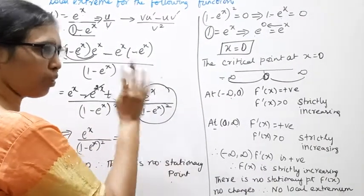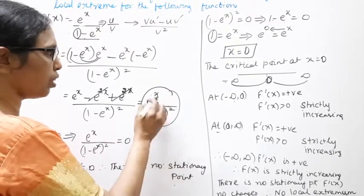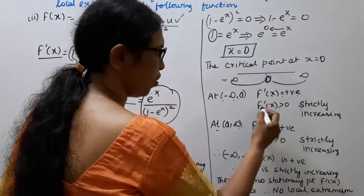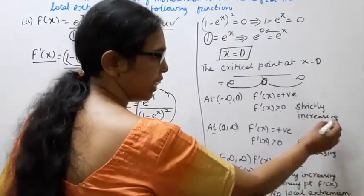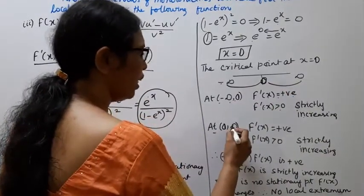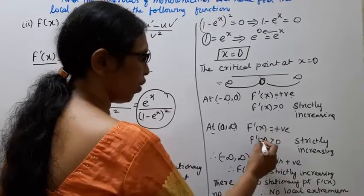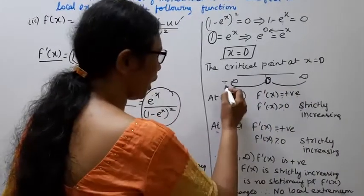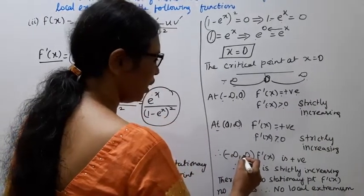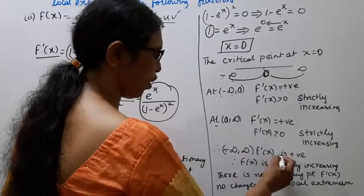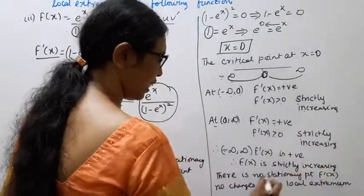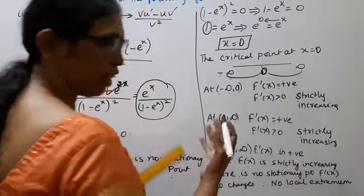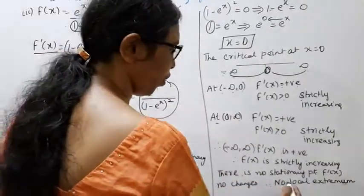For x in (-∞, 0), substituting a negative value: the exponential function is always positive, and the denominator squared is positive, so f'(x) > 0 — strictly increasing. For x in (0, ∞), positive values also give f'(x) > 0 — strictly increasing. Since f'(x) > 0 on both intervals, f'(x) does not change sign. Therefore there is no stationary point, and hence no local extrema.